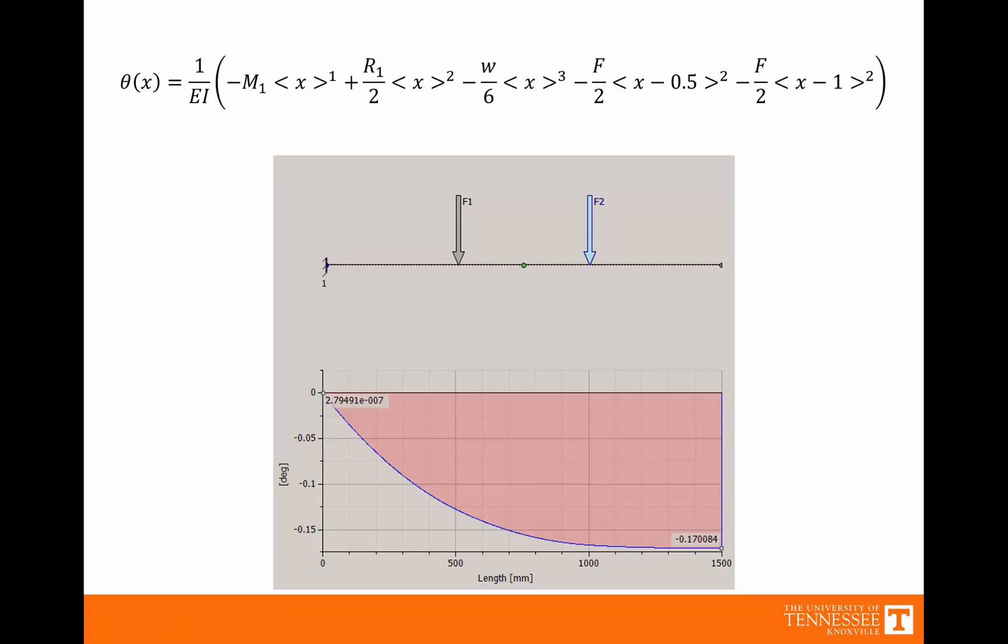Inventor will do this for us, and looking at Inventor's plot, this is what the slope diagram looks like for that loading condition. This makes sense, the slope starts at zero and then increases. It means the beam is bending, so it has a higher slope out here toward the end than it did at the beginning.